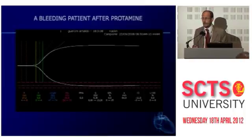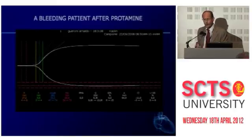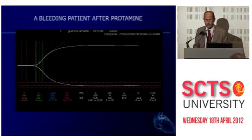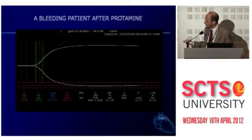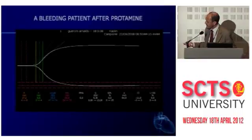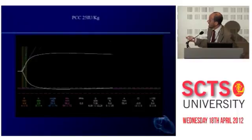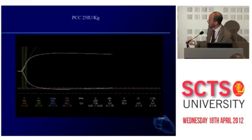Think about acute aortic dissection, grown-up congenital heart patients with acquired liver dysfunction due to venous blood stagnation, chronic liver disease, or even pediatric patients with very prolonged times. There are patients that can show this behavior, and if you simply provide prothrombin complexes to a bleeding patient, you can bring them back to normal.